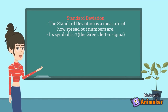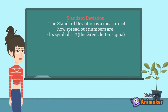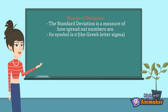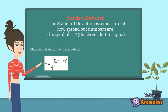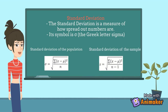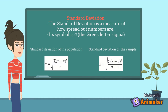Next is the standard deviation. The standard deviation is a measure of how spread out numbers are. Its symbol is the Greek letter sigma. This is the formula of standard deviation of a population, or you can simply get the square root of the variance. This is the formula of standard deviation of a sample, or you can also get the square root of the variance.